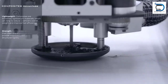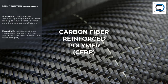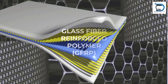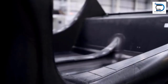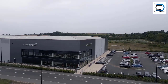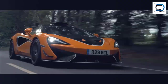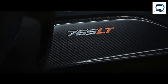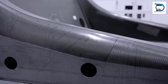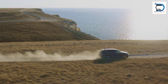Composites are made up of two or more different materials that combine their properties to achieve superior performance. Carbon Fiber Reinforced Polymers (CFRP) and Glass Fiber Reinforced Polymers (GFRP) are the two most commonly used composites in BAW. The most famous car manufacturer using these composite materials is McLaren.